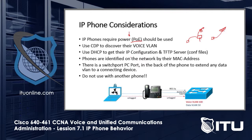Once the phone boots up, it uses CDP to discover its voice VLAN. The phone communicates to the switch: 'I'm a phone,' and the switch responds: 'I can see your MAC address — you're a Cisco phone, so I'm going to assign you to the voice VLAN.'